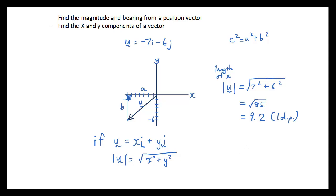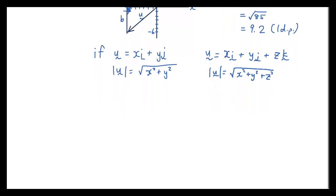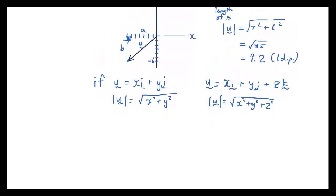Now this will work if you have 3D vectors as well. So for example, if u is equal to xi plus yj plus zk, then the distance of u, or the magnitude of u, will just be the square root of x squared plus y squared plus z squared. That's a z, or if you're American, you guys probably say z.